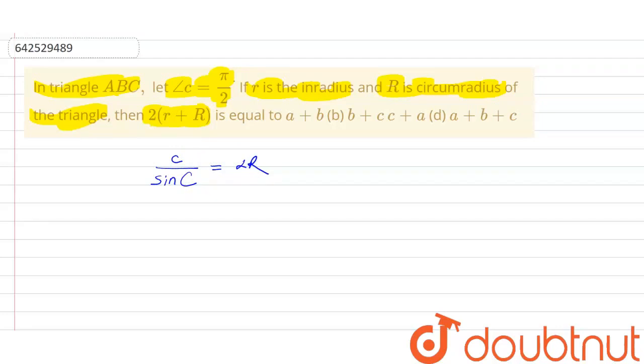Now, from here we get that small c is equal to 2R sin C, and C is given as π/2. From here we get that sin(π/2) is 1, so c is equal to 2R. We have written this because C equals π/2.